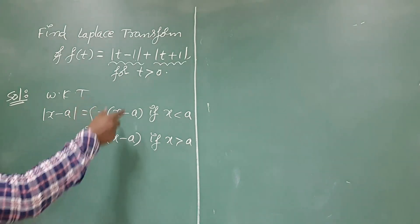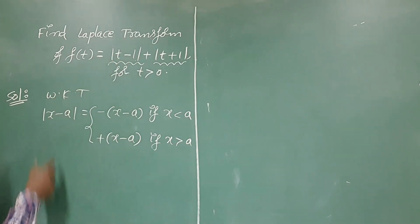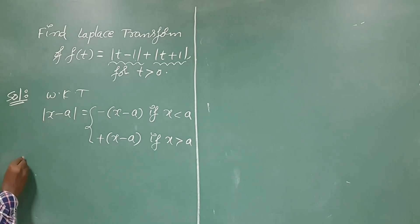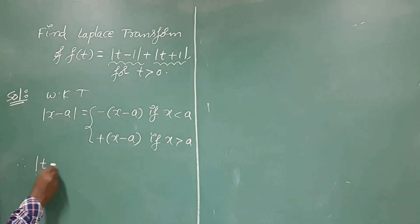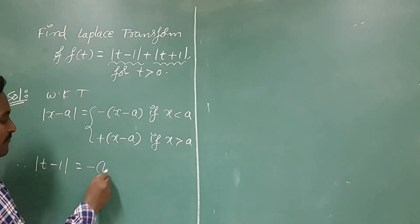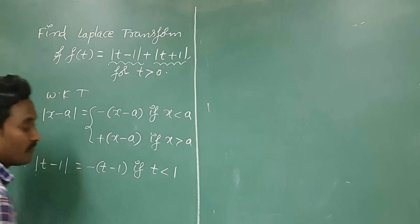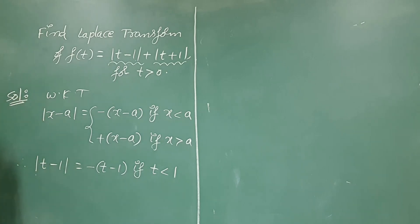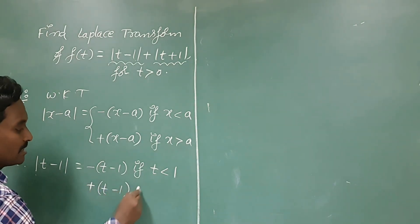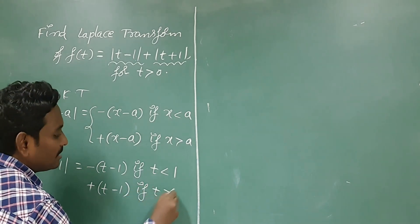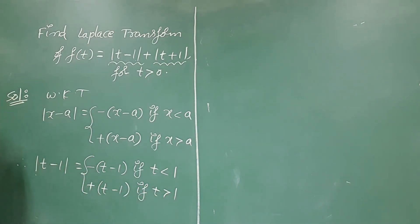Now we have to compare each modulus value with this definition. Modulus of t minus 1: here a equals 1. It would be minus of (t minus 1) if t is less than 1, and positive of (t minus 1) if t is greater than 1.